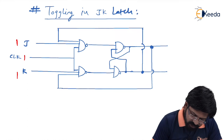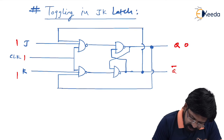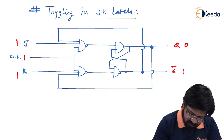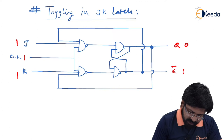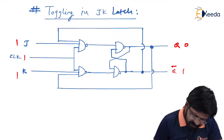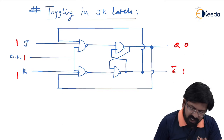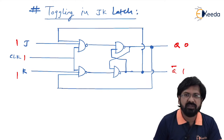Assuming previous outputs Q and Q_bar as 0 and 1 respectively. As you can see, the feedback is cross-coupled — Q is given as feedback towards the K gate and Q_bar feedback is given towards the J gate.